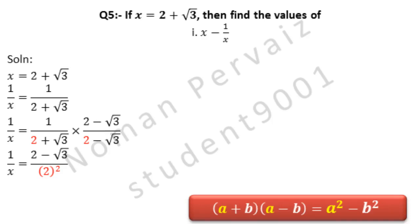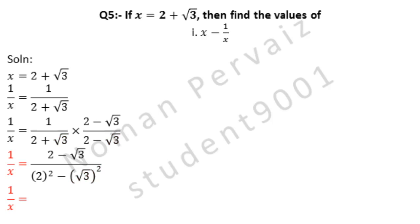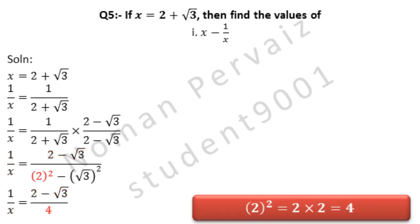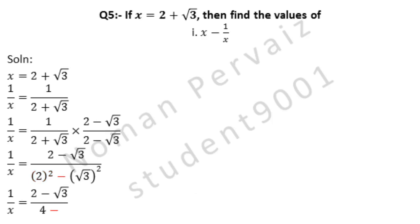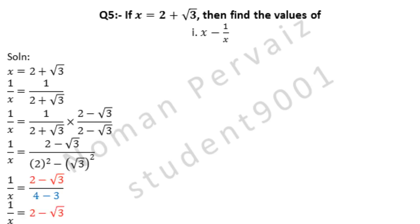By applying the formula, 2 squared is written, minus, and under root 3 whole squared. 1 over x is equal to 2 minus under root 3. Here, 2 squared is opened as 2 times 2, which gives 4. Minus — square and square root cancel, leaving only 3. So 1 over x equals (2 minus under root 3) divided by (4 minus 3), which is 1. Hence, 1 over x equals 2 minus under root 3.